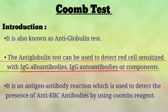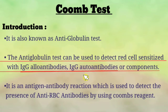The second question is: what are IgG allo-antibodies and IgG auto-antibodies? Allo-antibodies are antibodies which target non-self red cell antigens. For example, in the case of hemolytic disease of newborn, the body makes IgG allo-antibodies. IgG auto-antibodies occur in autoimmune diseases such as rheumatoid arthritis and systemic lupus erythematosus, where the immune system produces antibodies against self-antigens.